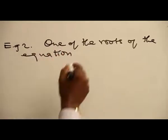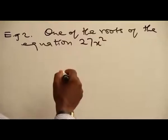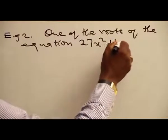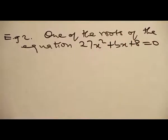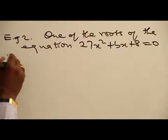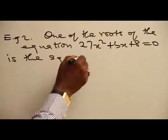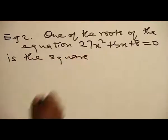27x² + bx + 8 = 0 is the square of the other.